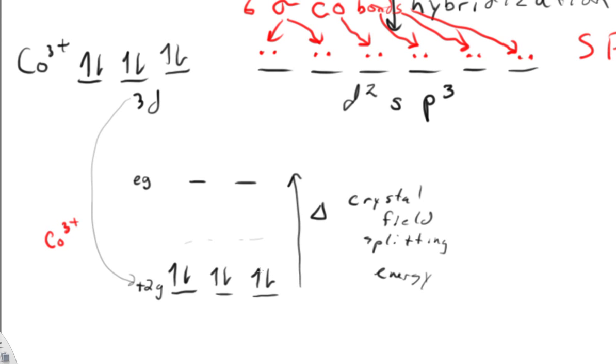the energy required to get these two electrons unpaired is very great. So because of that distance, these four electrons stay paired together. And that is how a strong field ligand works.